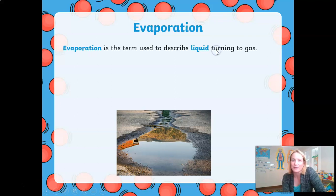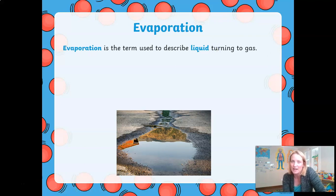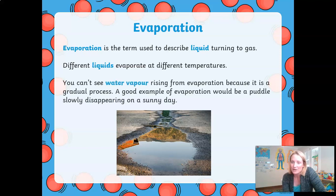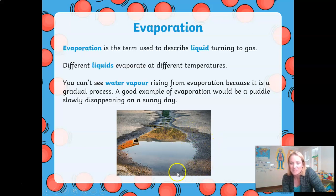Let's start with evaporation. Evaporation is the term we use in science when a liquid turns into a gas. Different liquids evaporate at different temperatures, and you can't see water vapor rising from evaporation because it's a gradual process. A good example of evaporation would be a puddle slowly disappearing on a summer's day. You'll see in the picture that the water in the puddle is slowly evaporating as the sun heats it up. We're going to learn more about evaporation when we look at the water cycle tomorrow.